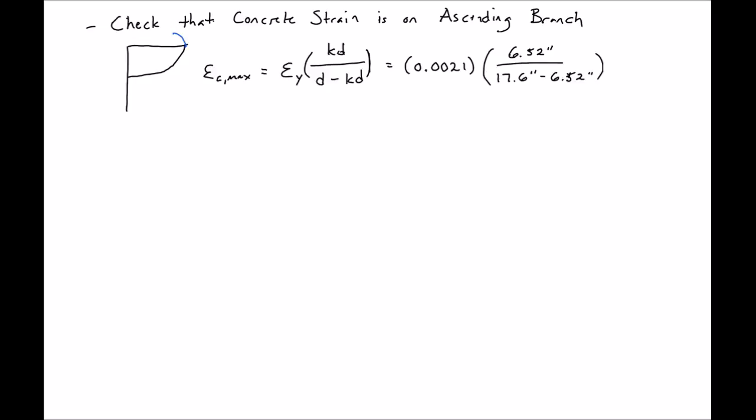When we plug in all of our values to find our epsilon Cmax, we'll find it is equal to 0.00123, which is less than our epsilon naught. So we know we're OK.